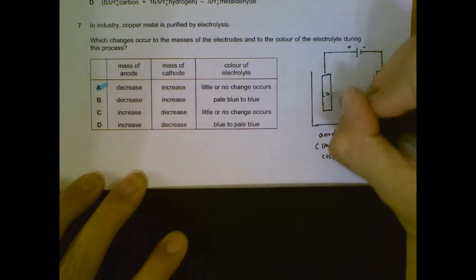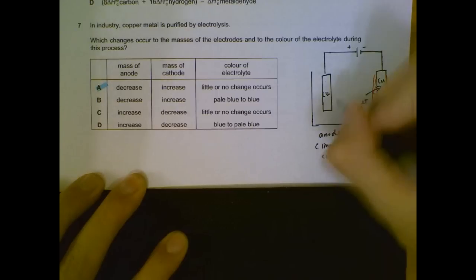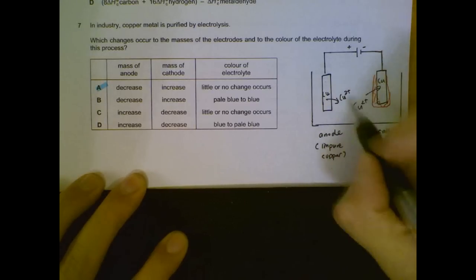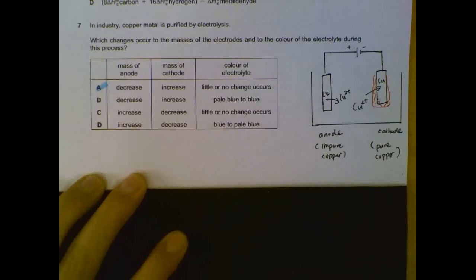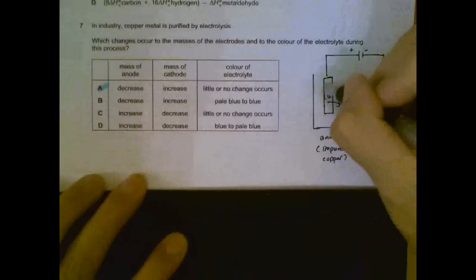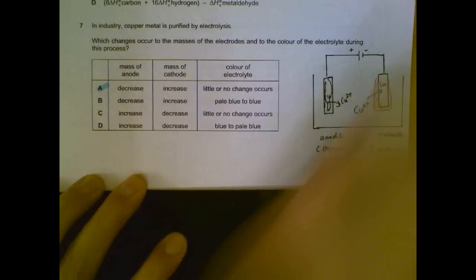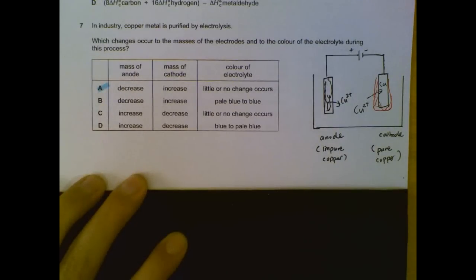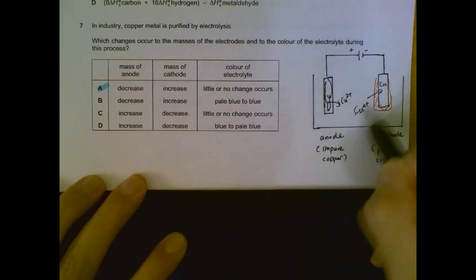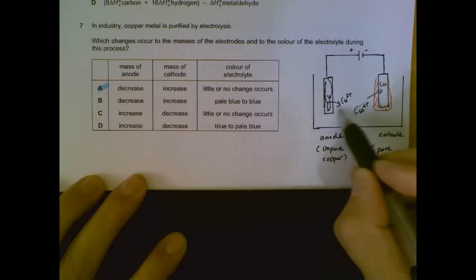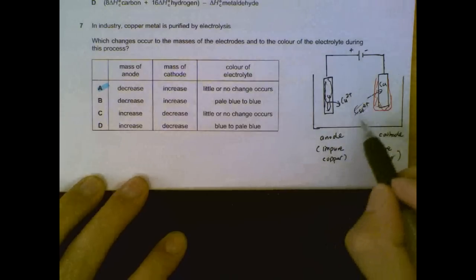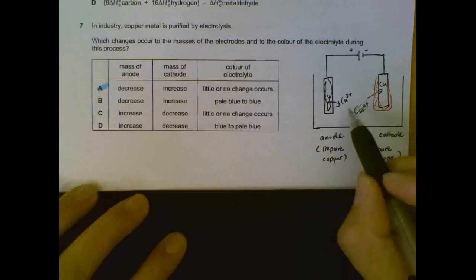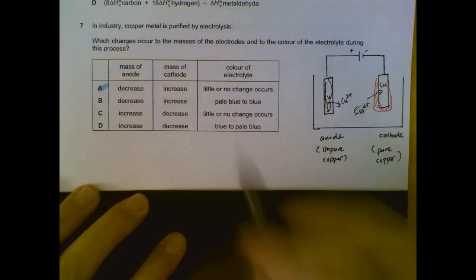Your anode is where your impure copper is. It's where oxidation takes place. So your copper ions, or your copper atoms here, will be oxidized to form copper ions and contribute into the solution. So as time goes by, the anode will get smaller and smaller. Since we have a removal of copper ions at the cathode and the contribution of copper ions at the anode, the concentration of copper ions in the electrolyte remains the same. So the intensity of the blue colour will have little to no change. So anode decrease.